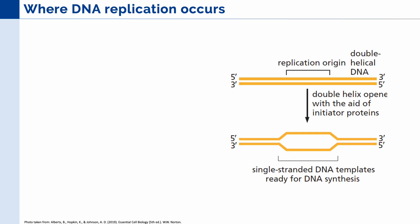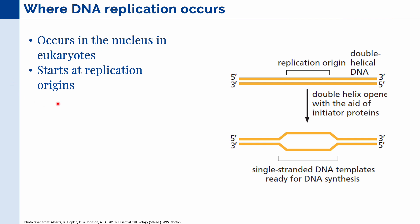Let's talk about where DNA replication occurs. In eukaryotes, this occurs in the nucleus. Meanwhile, in prokaryotes, DNA replication occurs in the cytoplasm. DNA replication starts at replication origins, which are specialized sequences of DNA that are used by various proteins to open up the DNA and begin replication.